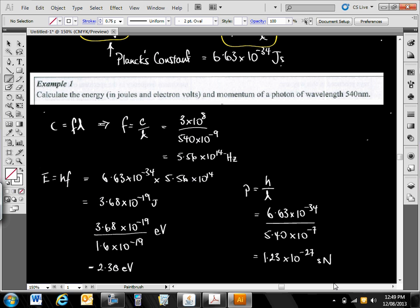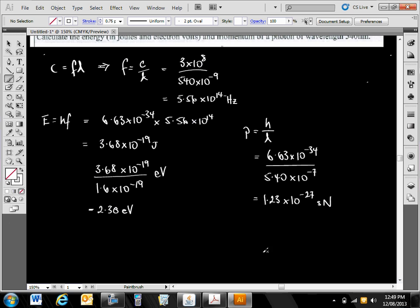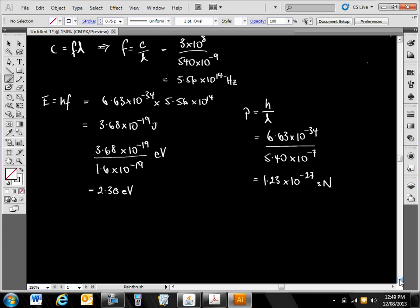Now, you might notice also something about this number here. What's with that number? It's very small, isn't it? We're talking about a photon momentum, and it is very small for a single photon of wavelength 540 nanometers. I'll remind you, any questions about... No? Good?